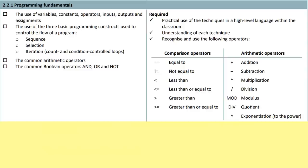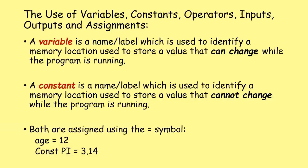2.2.1 Programming Fundamentals. A variable is a name or label which identifies a memory location used to store a value that can change while the program is running. A constant is a name or label which identifies a memory location used to store a value that cannot change while the program is running. Please memorize these definitions - they come up time and time again and it's difficult to work them out on the day.